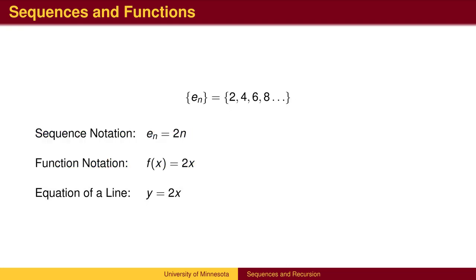Notice the similarities between sequences defined explicitly and function notation. For sequences, we usually use the subscript n as the input, whereas functions typically use x as the input variable. Sequence names commonly use many different letters, just as many different letters are used to represent functions. Trigonometry uses three-letter abbreviations for functions like sine and cosine.